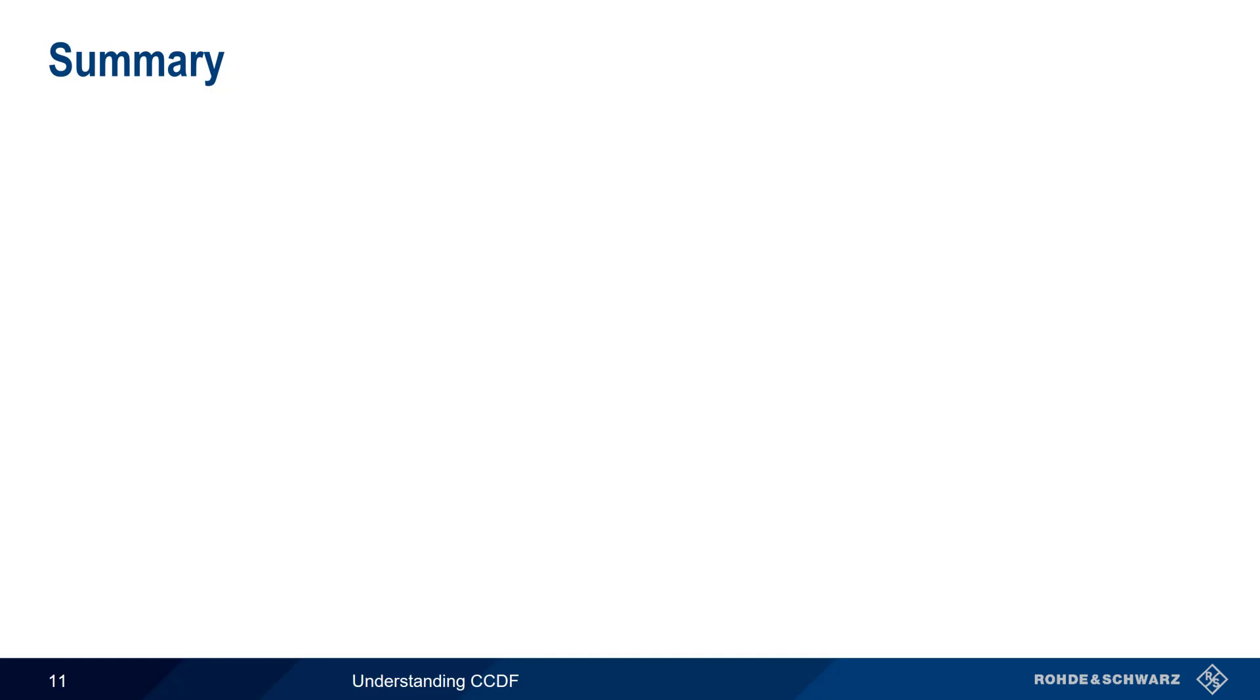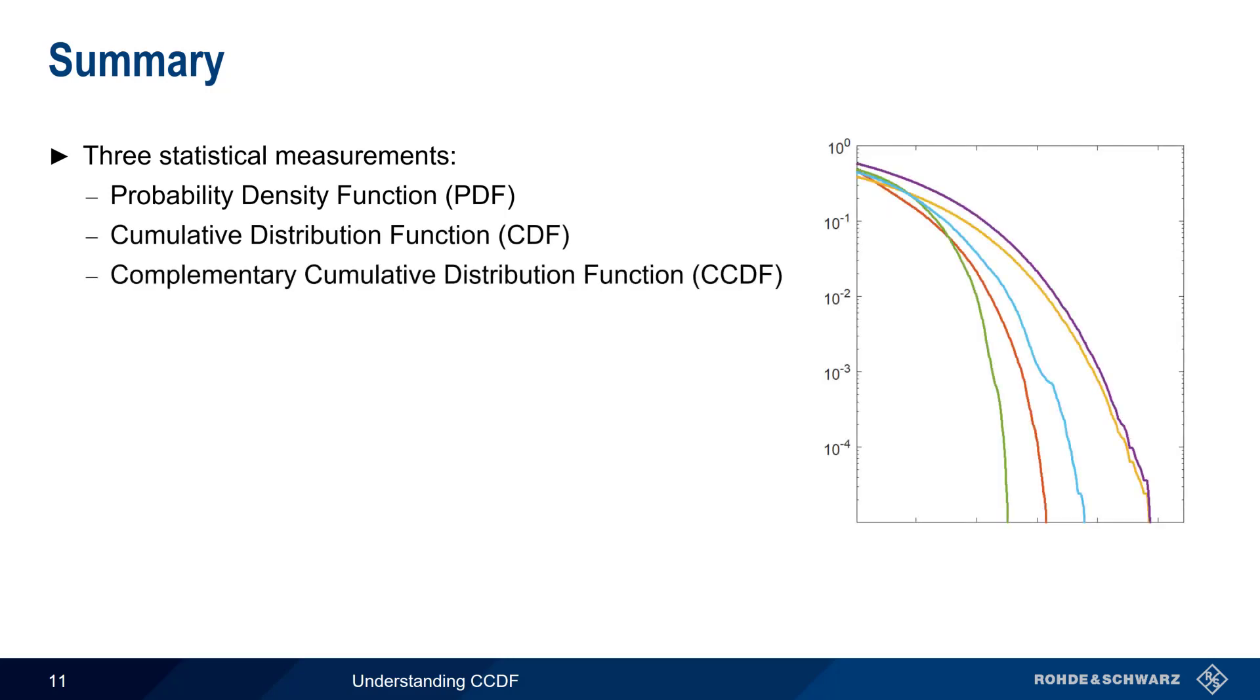So in summary, there are three statistical power measurements: the probability density function or PDF, the cumulative distribution function or CDF, and the complementary cumulative distribution function or CCDF. Of these, CCDF is by far the most common and the most important.